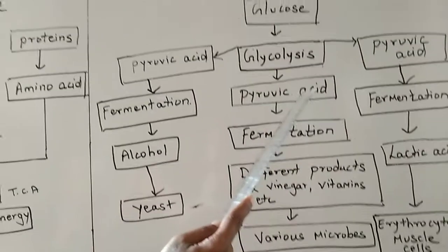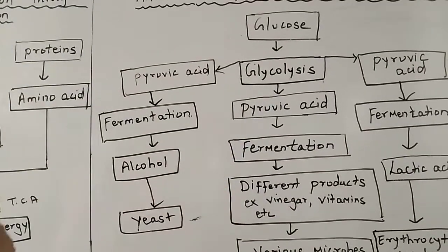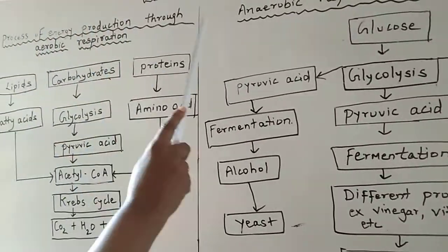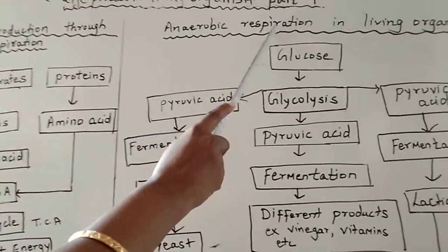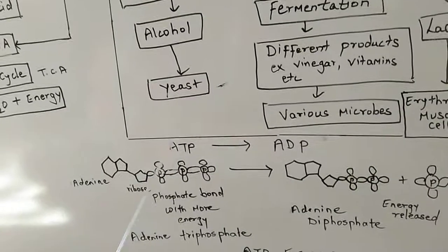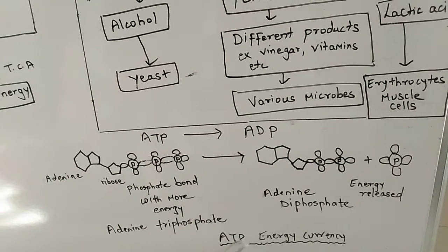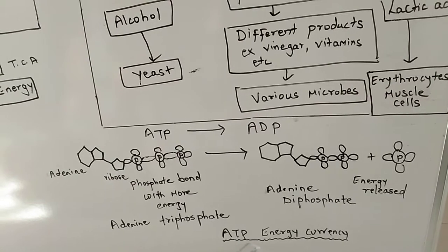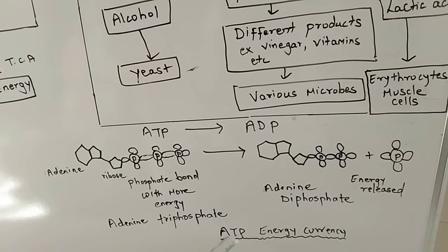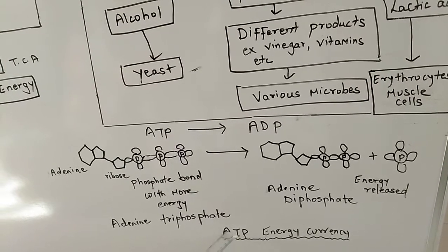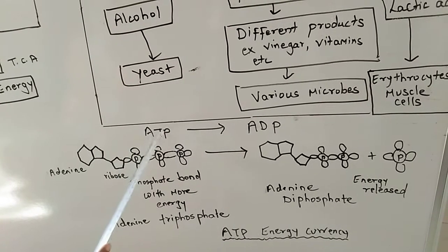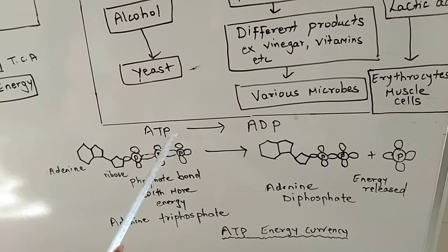So here we have taken information about two types of respiration: aerobic respiration and anaerobic respiration. Now we are going to study about energy currency. Energy currency means ATP. What is the full form of ATP? Adenosine triphosphate.